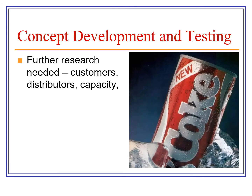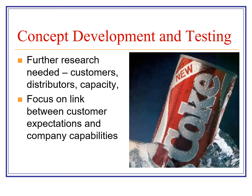At the concept development stage, you need more research — on customers, distributors, and capacity. It could mean that going into this product requires stopping production of another line. You look at the link between what customers expect and what you can deliver. Focus groups are used here. A classic example is Coca-Cola: they were losing ground to Pepsi, whose 'choice of a new generation' campaign was slowly catching up. In a billion-dollar industry, even half a percent matters, so Coke thought maybe they needed to make their drink sweeter.